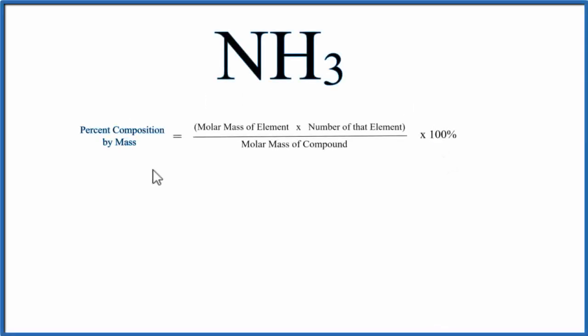To find the percent composition by mass for NH3, ammonia, we'll look at the periodic table to find the molar mass of each element and then find the molar mass of the entire compound and we'll use this equation here.